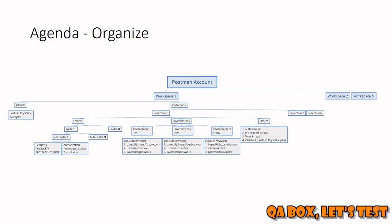You have to have a Postman account. Once you have the account, it provides you the possibility to create any number of workspaces — workspace one, workspace two, workspace n. Of course, in your case you are going to give it a meaningful name; this is only for explanation purposes. Inside each workspace there are two more things: the first one is globals, and the other is that inside a workspace you can have multiple collections.